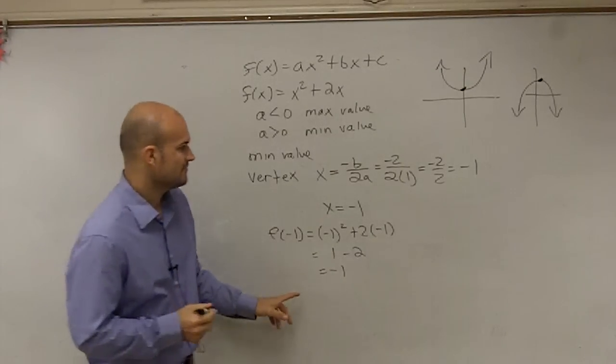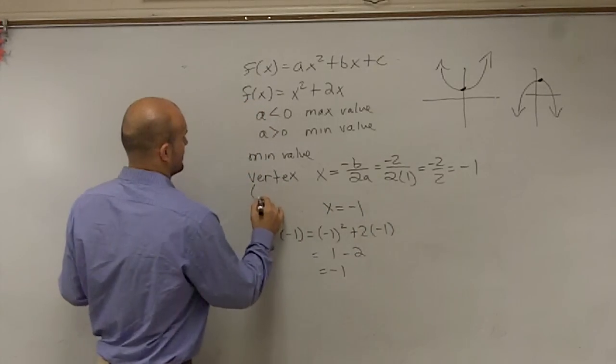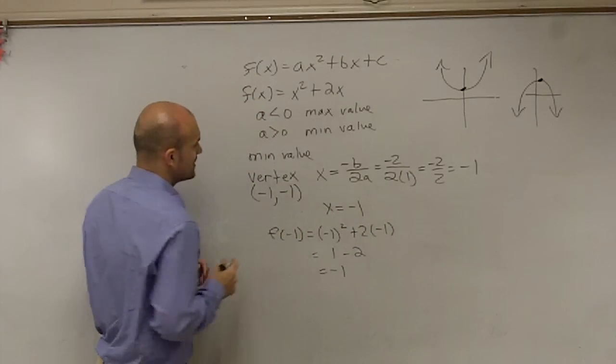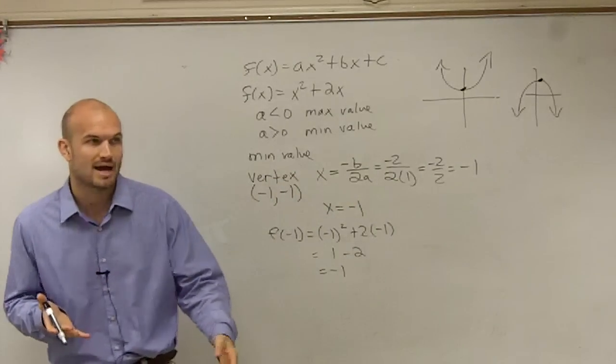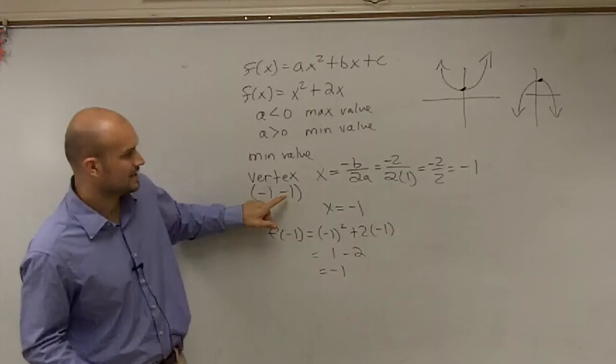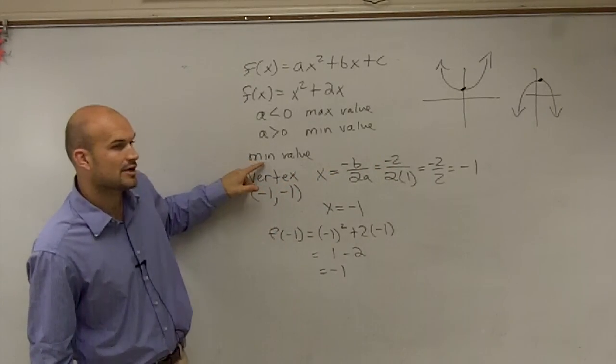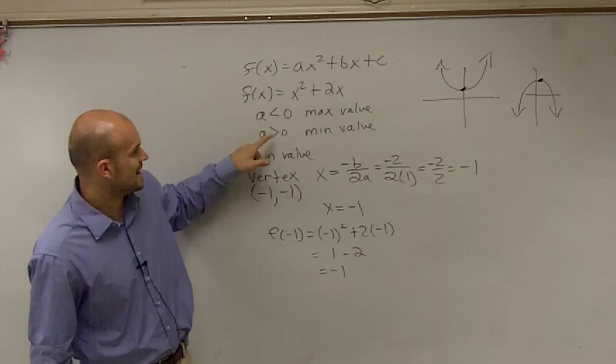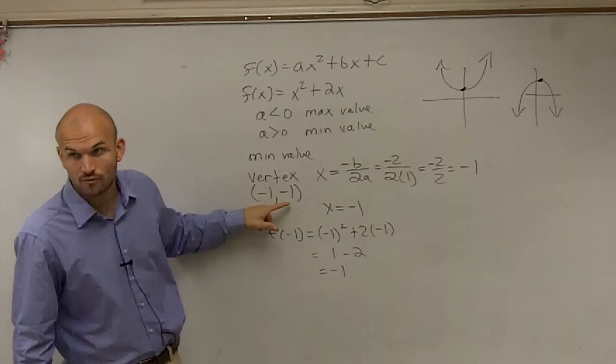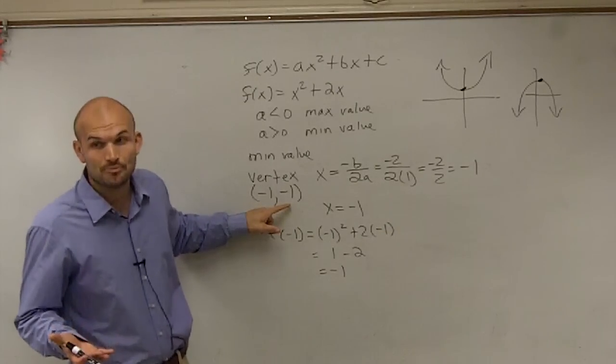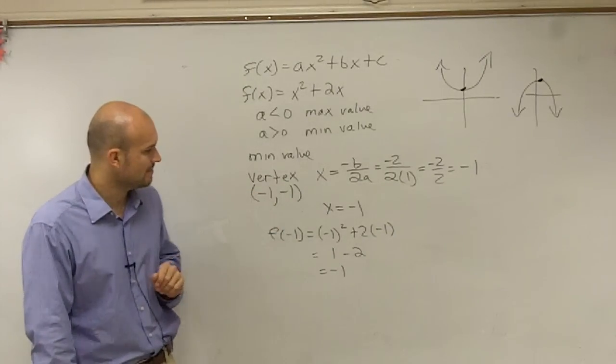OK? So therefore, my vertex is at negative 1 comma negative 1. So that's going to be the value of my minimum value. So if you look at the value, if we were going to kind of plot this, you could say my graph is going to have a minimum value, because my a is greater than 0. And the minimum value is going to be at negative 1, because that's the output of my vertex. So my vertex is at negative 1 comma negative 1.